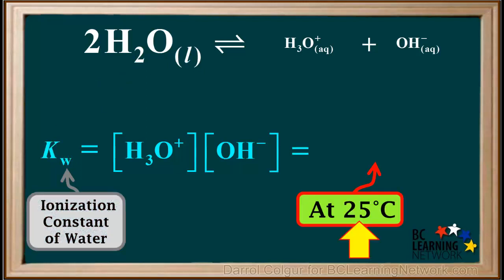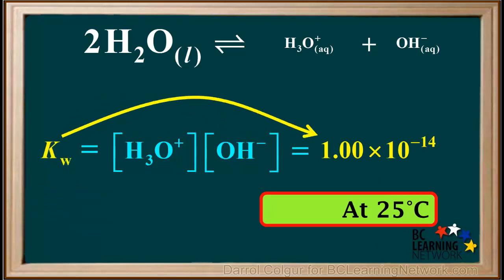The value for Kw is temperature dependent. At 25 degrees, the value is 1 times 10 to the negative 14th. It is very important to remember that the value of Kw is 1 times 10 to the negative 14th, only at 25 degrees Celsius and at no other temperature.